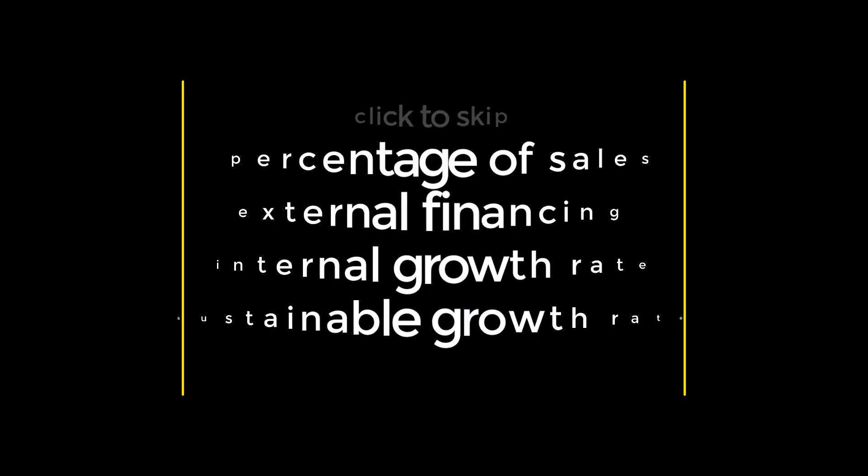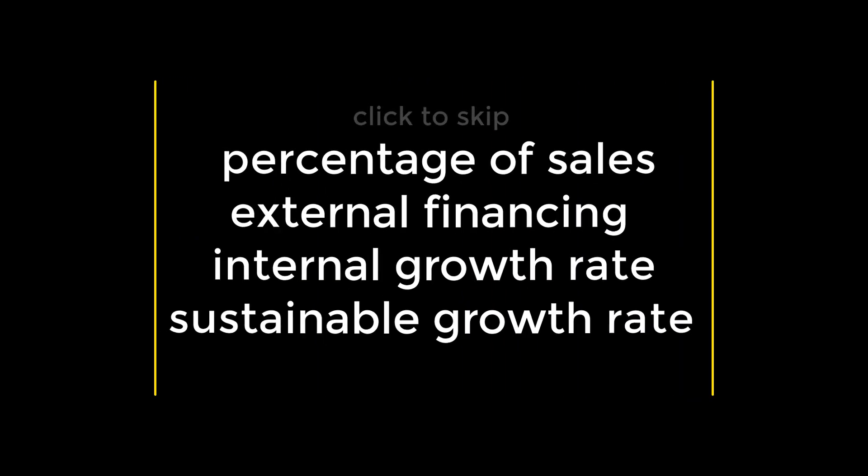In the two previous videos, we learned to interpret and compare financial statements. In this video, we'll learn how to use financial statements to project a plan. We'll begin by using the percentage of sales method to create a pro forma or projected financial statement. Then we'll look at the relationship between external financing needed, EFN, and growth, as well as how to determine internal and sustainable growth rates.